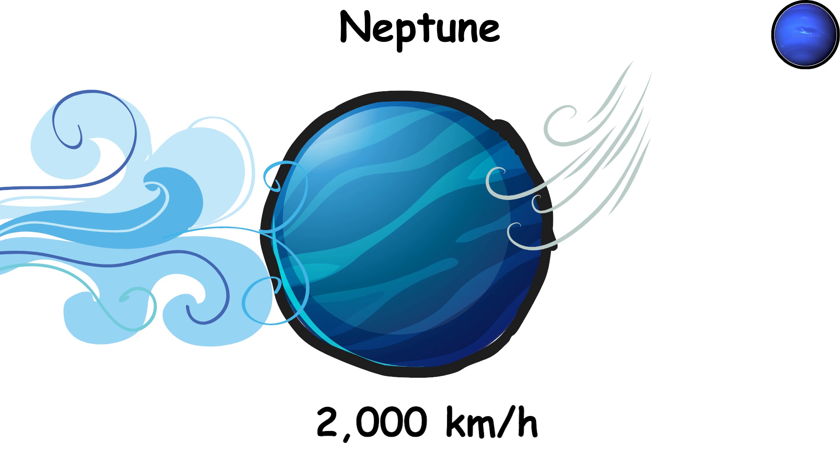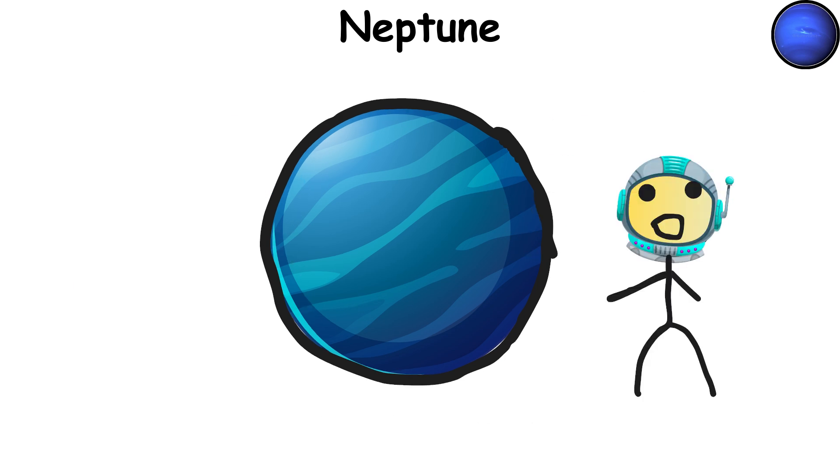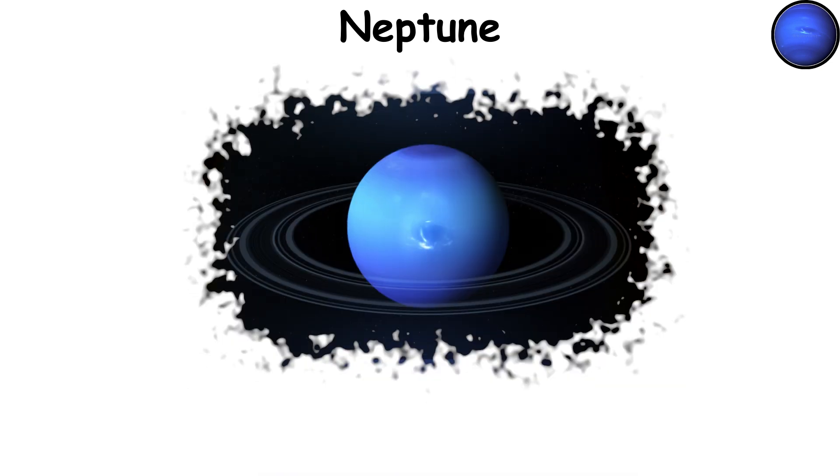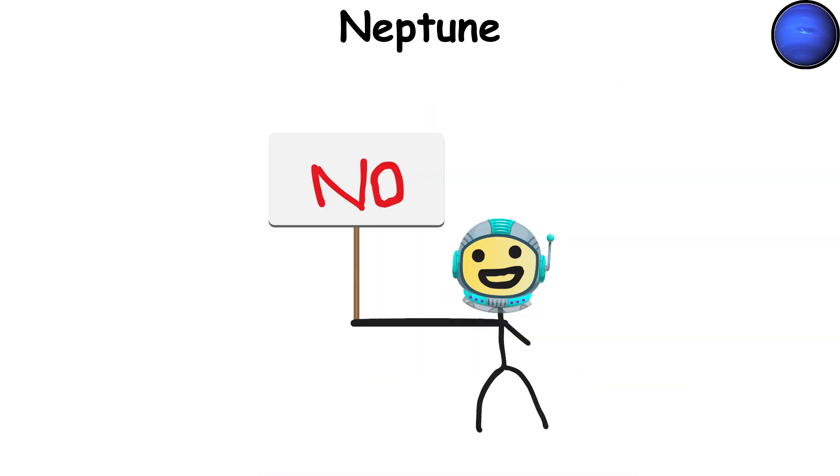It's a deep freeze out here with temperatures plummeting to negative 373 degrees Fahrenheit or negative 225 degrees Celsius. And did I mention that Neptune has a faint ring system too? Life? Not a chance unless you're into extreme weather and sub-zero temperatures.